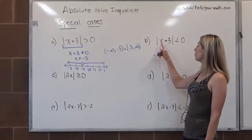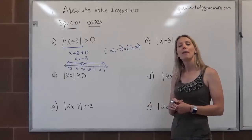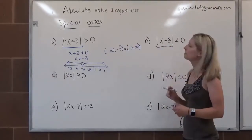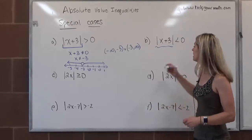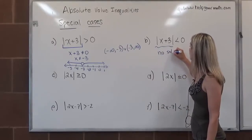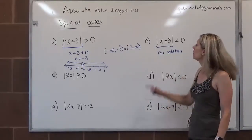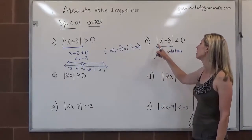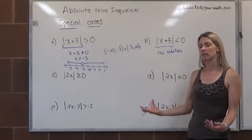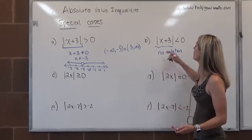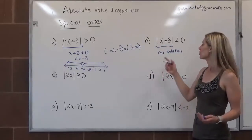Special case number 2: when is the absolute value of something smaller than 0? What does it mean if something is smaller than 0? That means it's negative. So when is something that's an absolute value negative? It's not. So we would say there is no solution — it's impossible. You can't find any number. If we try negative 4: negative 4 plus 3 is negative 1, but the absolute value of negative 1 is 1, and 1 is not less than 0. Ultimately, the smallest an absolute value can be is 0, and 0 is not less than 0. So there's no solution.